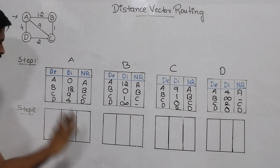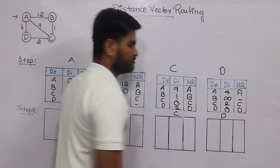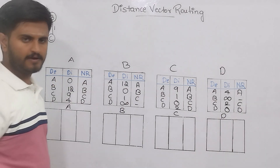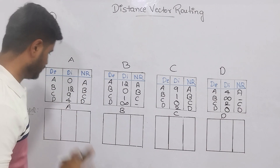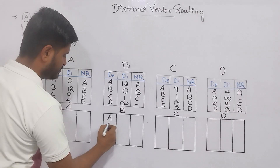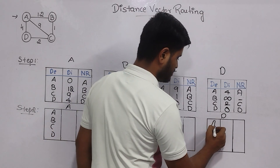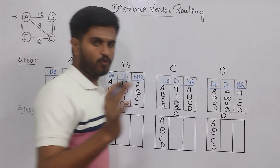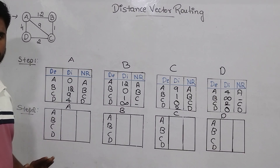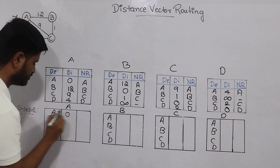Now the second step. In this step, you will also be writing the routing table for all the routers A, B, C, D with the same columns: destination, distance, and next router. What you must do in this step is search for the shortest path using other routers as well. From A to A and B to B etc., there is no cost, so the diagonal values remain 0.